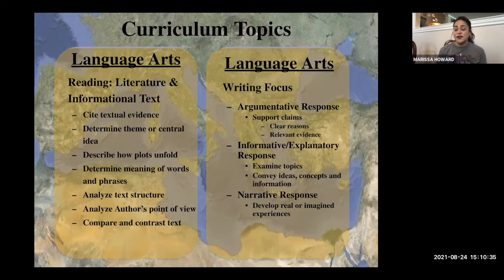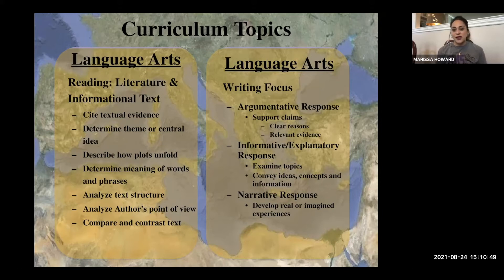We use lots of rich literature with novels that span across many genres, and some tie into what we learn in social science. That goes hand in hand with our writing. The three major writing topics in sixth grade are argumentative, explanatory or informative, and narrative response.